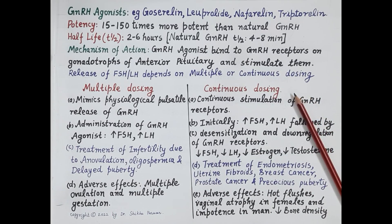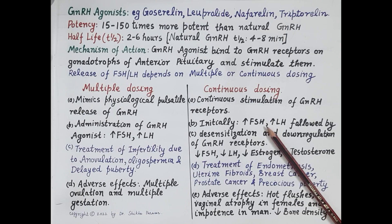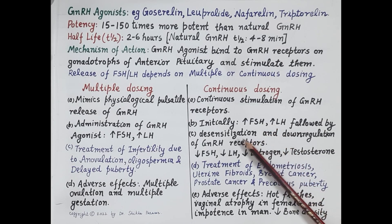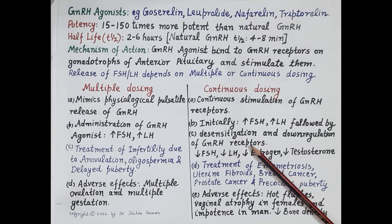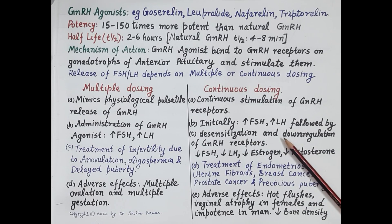With continuous dosing, continuous stimulation of GnRH receptors initially stimulates them, causing an increase in secretion of FSH and LH. However, over time this continuous stimulation causes desensitization and downregulation of GnRH receptors. Since GnRH receptors are not accustomed to continuous stimulation, this results in a decrease in receptor response and reduced expression — that is, a reduced number of GnRH receptors — ultimately resulting in reduced secretion of FSH and LH.